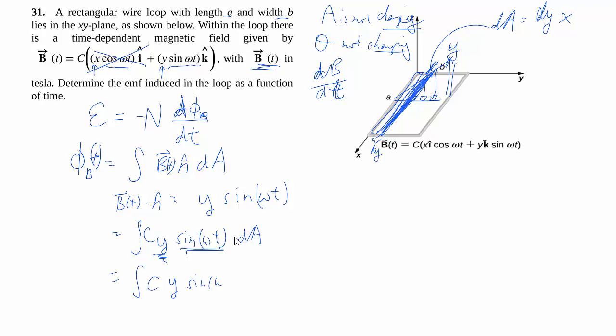And then we add all these contributions up. Because we're integrating with dy, with respect to y, as time goes on, that doesn't depend on y. So we can take all that out, c sine omega t, x, integral of y dy. It's not a very complicated integral, but it is an integral nonetheless. And that happens because my magnetic field, its amplitude, changes for different ys.